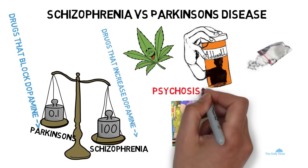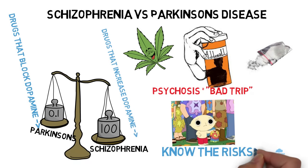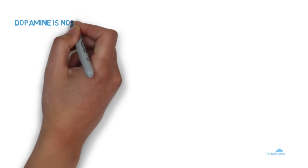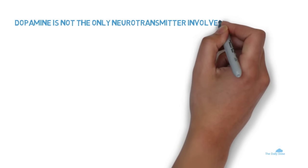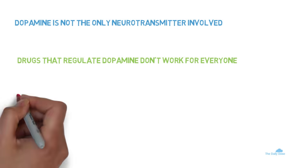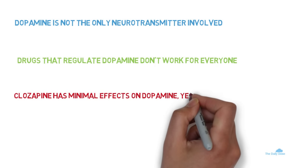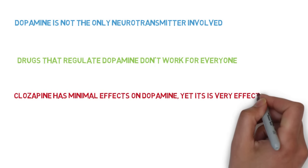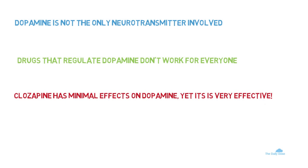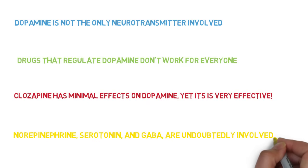Similarly, drugs that increase or stimulate dopamine — like marijuana, amphetamines, cocaine — can induce psychosis, or what is widely known as a bad trip by recreational drug users. So yes, drugs can cause psychosis. Even marijuana can lead to psychotic symptoms, and more consistent use can further increase that risk. It's very important to know the risks before ingesting anything. Dopamine is not the only neurotransmitter involved. Medications that regulate dopamine firing are far from perfect — they don't work for everyone. Clozapine is arguably one of the most effective antipsychotics on the market, reserved for people resistant to all other treatments, and it has very weak antagonizing effects on dopamine. So this suggests that norepinephrine, serotonin, GABA, and other neurotransmitters are undoubtedly involved.